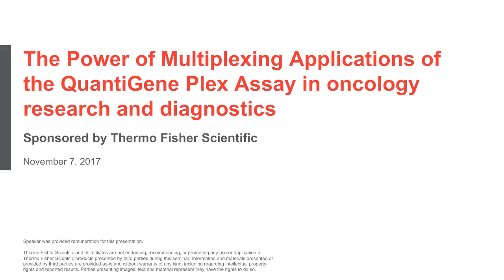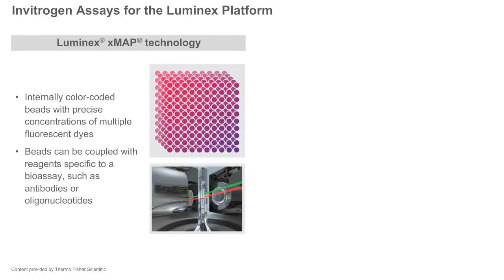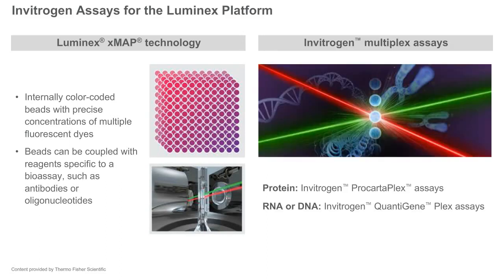Thank you. Today I will be presenting the power of multiplexing with the QuantiGene Plex assay. The biomarker research I am about to present relied on the QuantiGene Plex assay, which is a Luminex-based multiplex RNA assay. Luminex technology uses color-coded magnetic beads conjugated with antibodies specific to particular assays, allowing users to multiplex several targets in the same well. Thermo Fisher Scientific supplies a variety of Luminex-based assays to measure RNA, DNA, as well as protein.